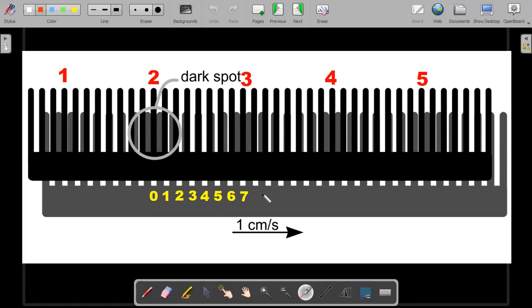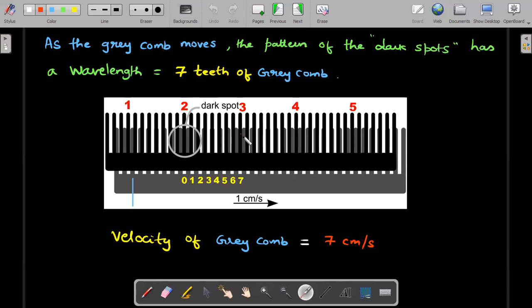If I move one tooth along, this pattern would be newly formed, but the pattern gap would move from here to here. For every 1 cm/s now, converting from one tooth per second to 1 cm/s, you can argue that there will be 7 cm/s movement of these dark spots.